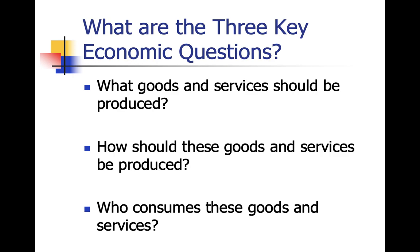The second question is: how are we going to make these goods and services? Take Starbucks coffee — the good is coffee, made by sourcing certain coffee beans from around the world. The third question is: who's going to consume it? For Starbucks, it's busy people and working professionals. When a business or government makes decisions, they answer these three questions.